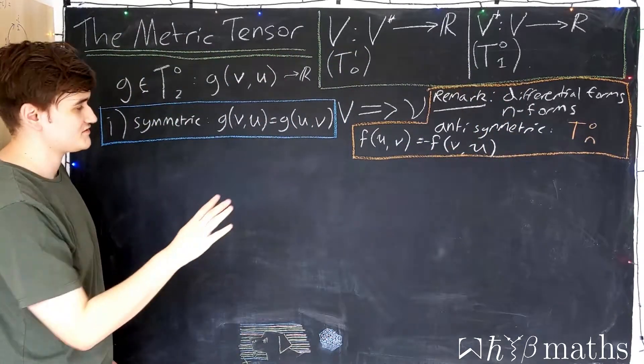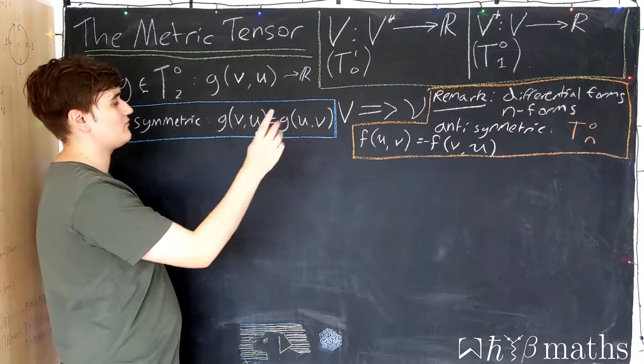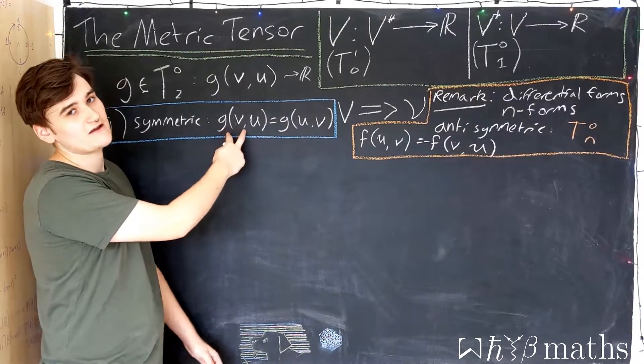So that's a side remark. Just so you know, I'm not using the bilinear form language, I'm just going to keep calling the metric a (0,2) tensor.